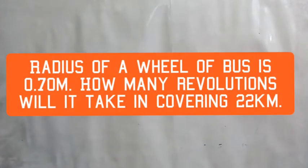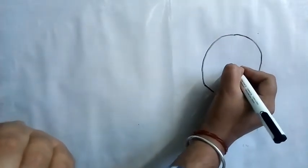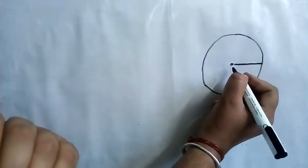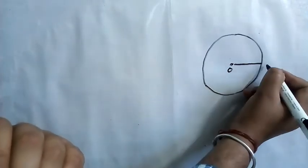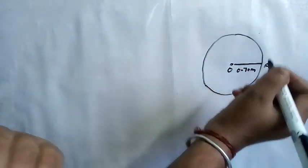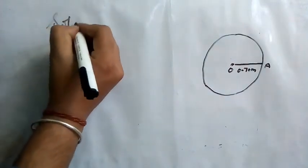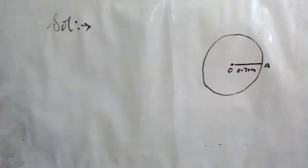The next question: the radius of a wheel of a bus is 0.70 meters. How many revolutions will it take to cover 22 kilometers? This question is the opposite of the previous one. The radius of the wheel is 0.70 meters, and we have to find out in how many revolutions it will cover 22 kilometers. First we need to find the circumference, as only the circumference touches the ground.